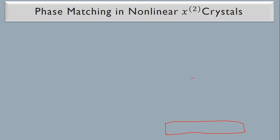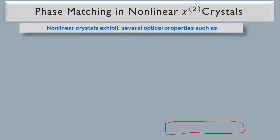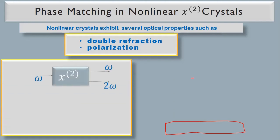Today's lecture is on phase matching in nonlinear χ² crystals. Nonlinear crystals exhibit several optical properties such as double refraction in birefringent media and polarization in nonlinear optics. Suppose we have a χ² material or crystal with a pump at frequency ω, and the expected outputs are at ω and 2ω, which is what we call second harmonic generation.